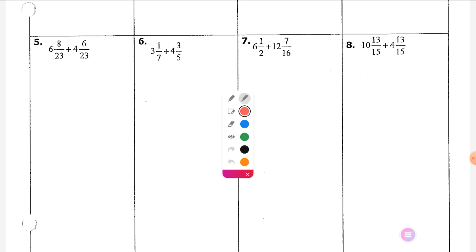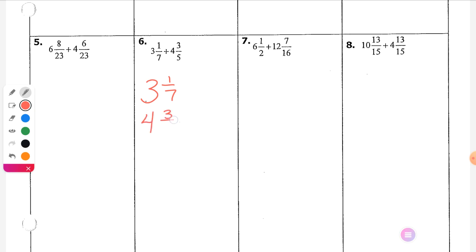I'm going to set this one up vertically. I just like, I think it's more visually helpful. So 3 and 1 seventh, 4 and 3 fifths is the original problem. Ethan wants to get them both to 35. So I'm going to do times 5, times 5, times 7, times 7. So I'd have 3 and 5, 30 fifths and 4, 21, 30 fifths.